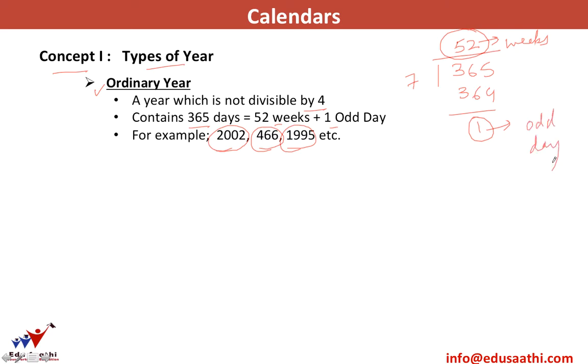An odd day is the extra number of days when a number is divided by 7.